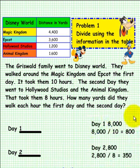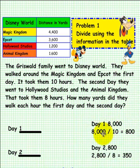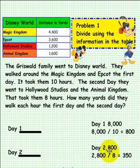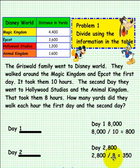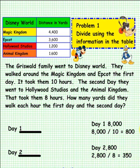Here is what we have as an answer. The first day, adding them up, was 8,000 yards. 8,000 divided by 10 is 800 yards per hour. The second day was 2,800 yards. 2,800 divided by 8 is 350 yards per hour. If your answers match ours, that is fantastic.